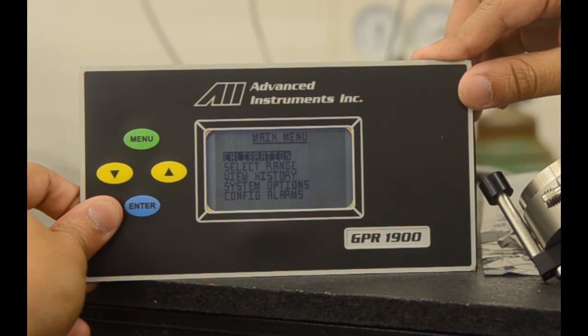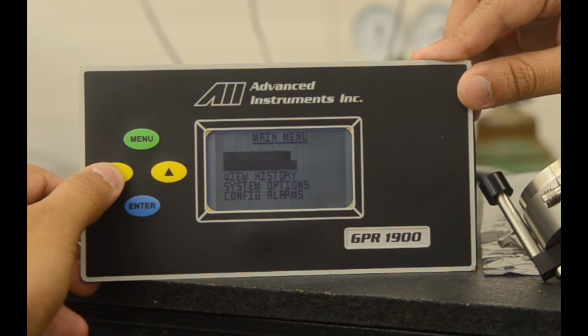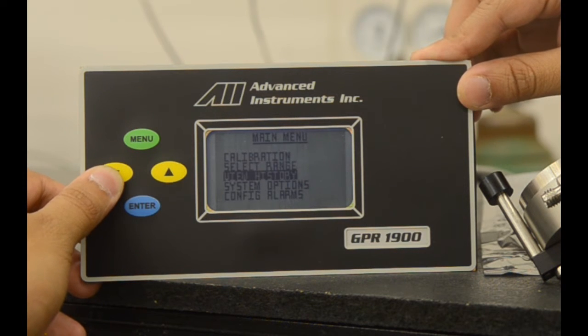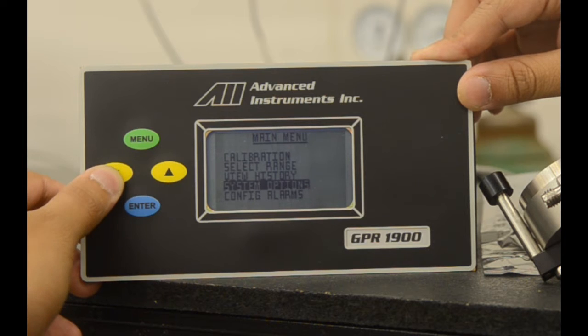There you'll have the options of calibration, select range, view history, system options, and configure alarms.